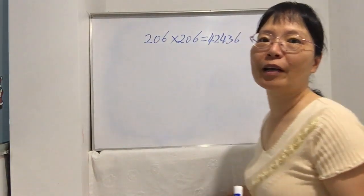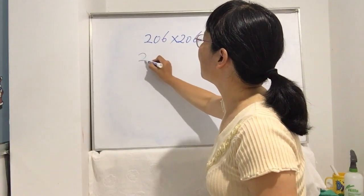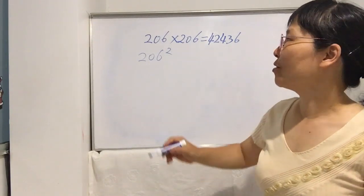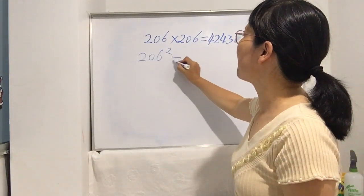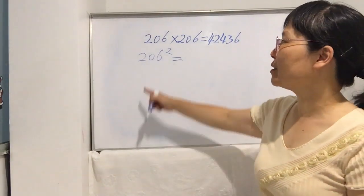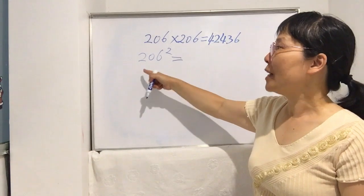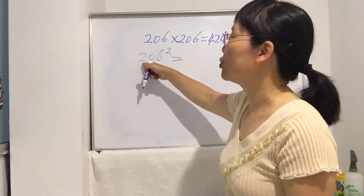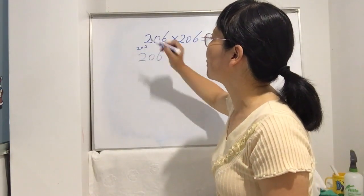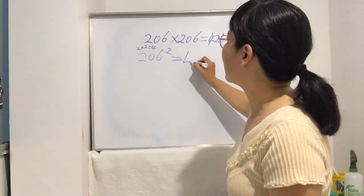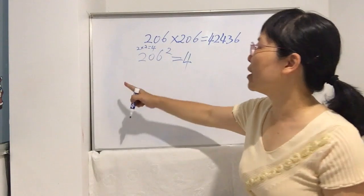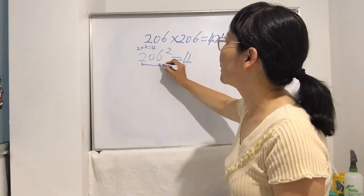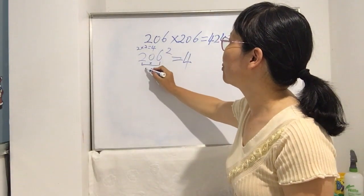Today I'm going to share the fast way to work it out, even though the normal way uses so many steps. This is 206 squared — it becomes just three steps. The first step: look at the hundreds digit. Two times two is four. Write down four first.